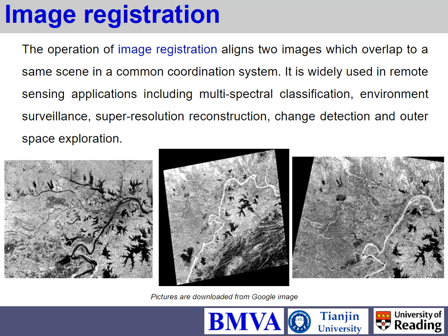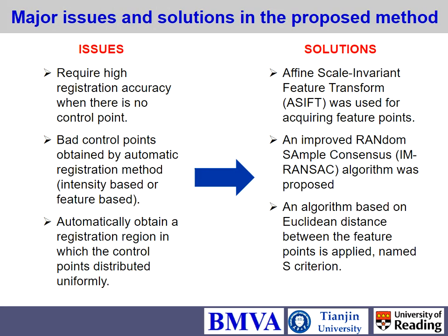The background of this work is the Chinese Chang'e moon exploration mission. The camera used is a push-broom linear camera. The satellite has two cameras mounted at fixed angles to focus on the same scene, in order to acquire information about the moon surface. This requires high registration accuracy to reconstruct the moon surface.